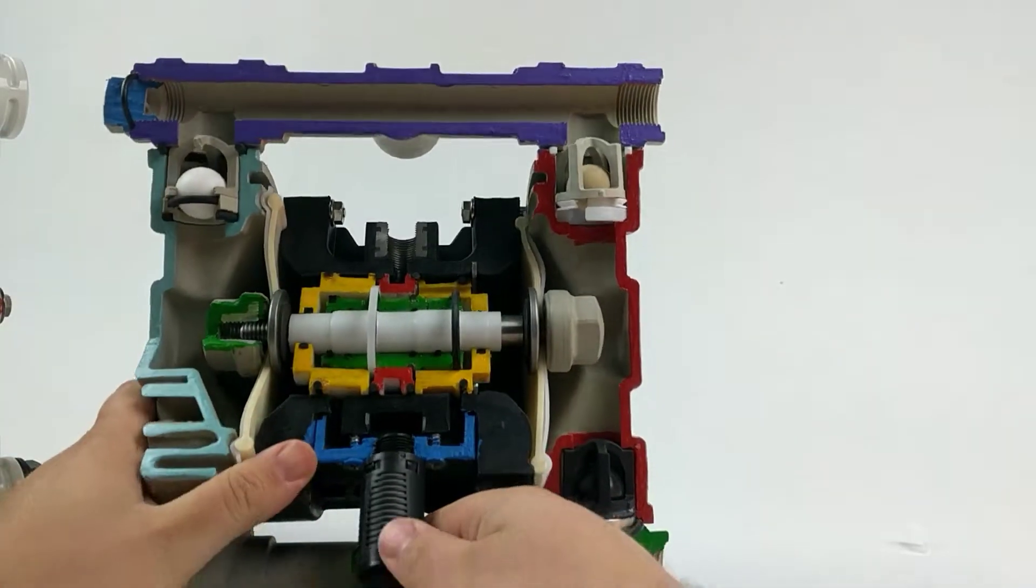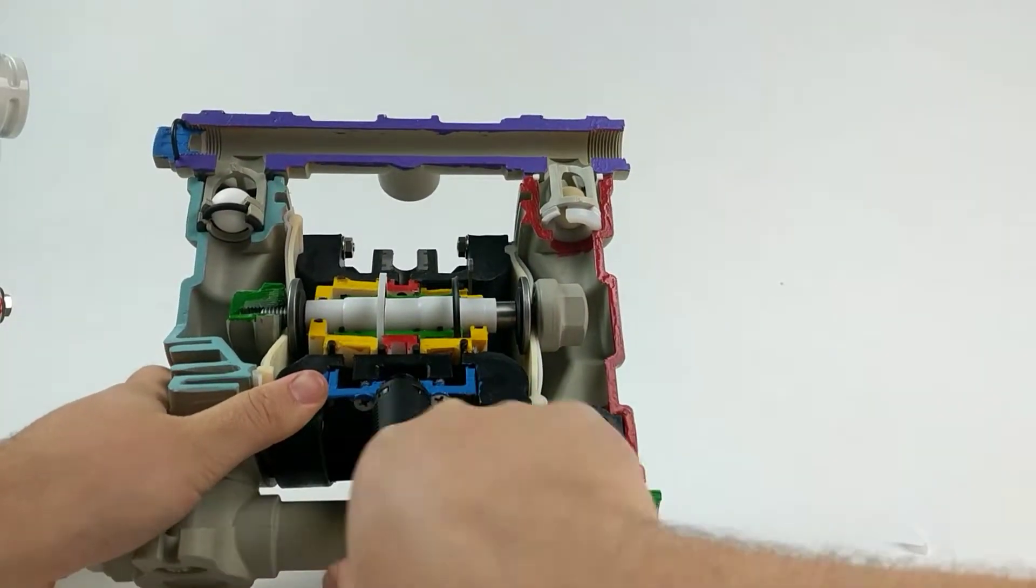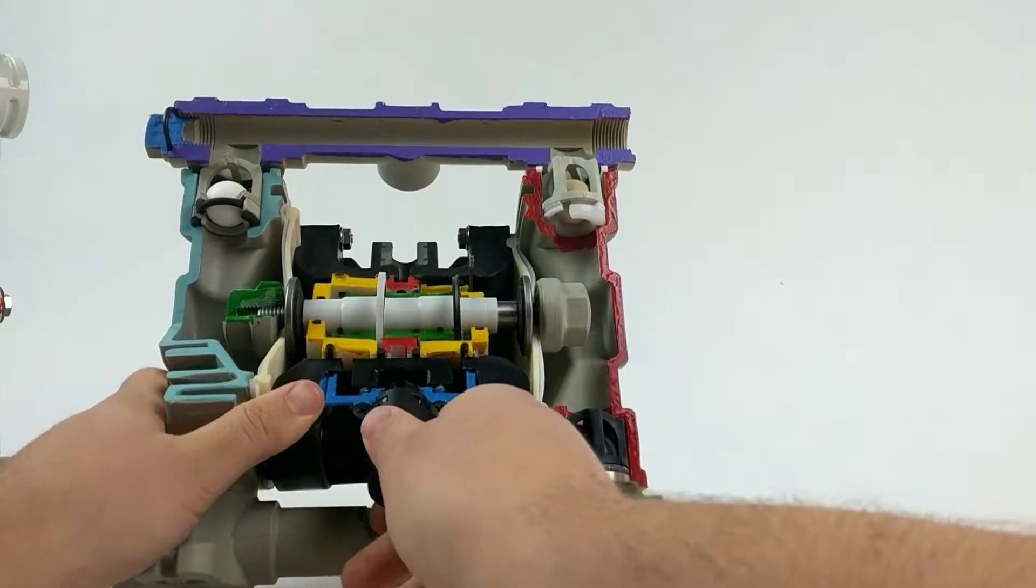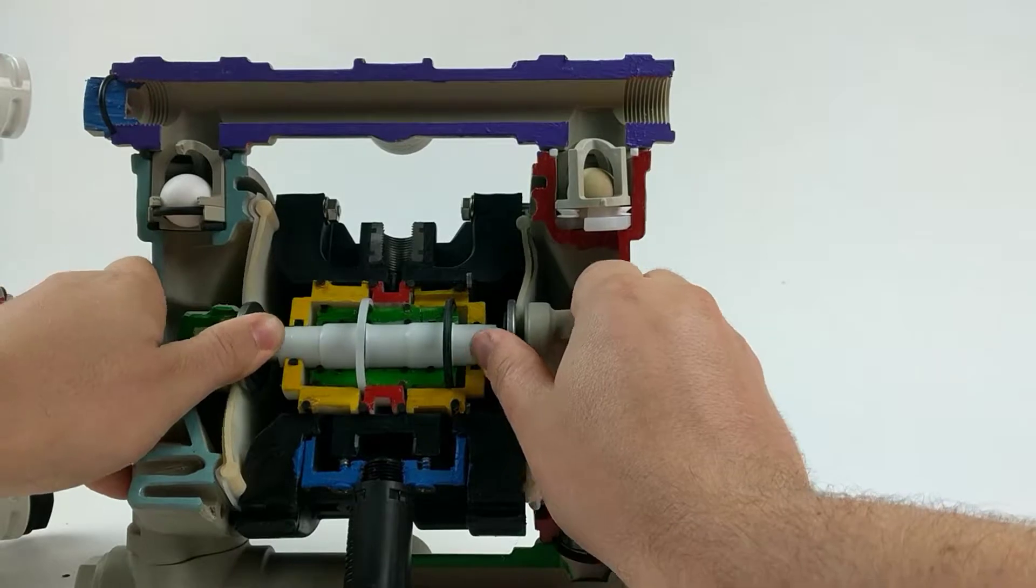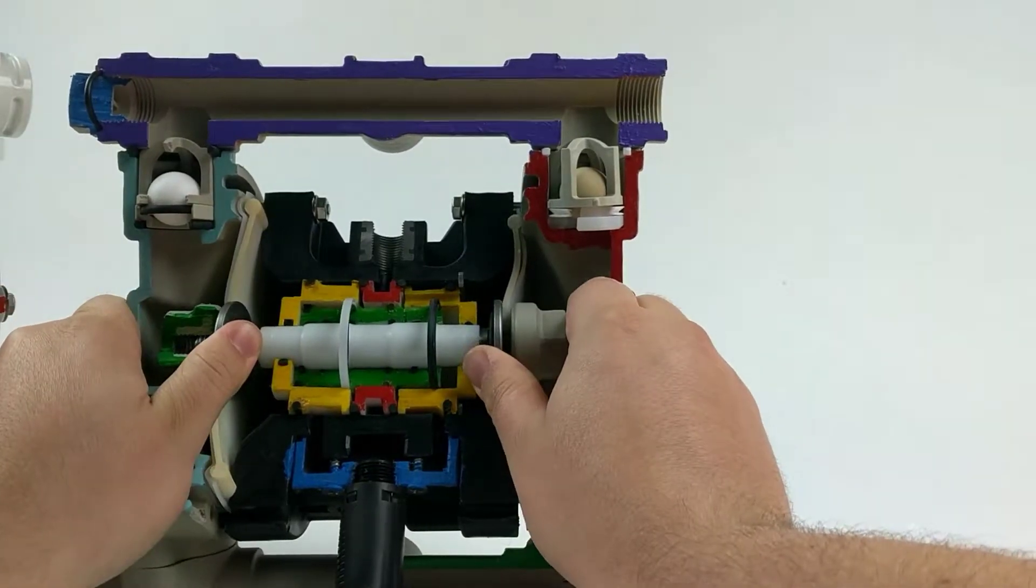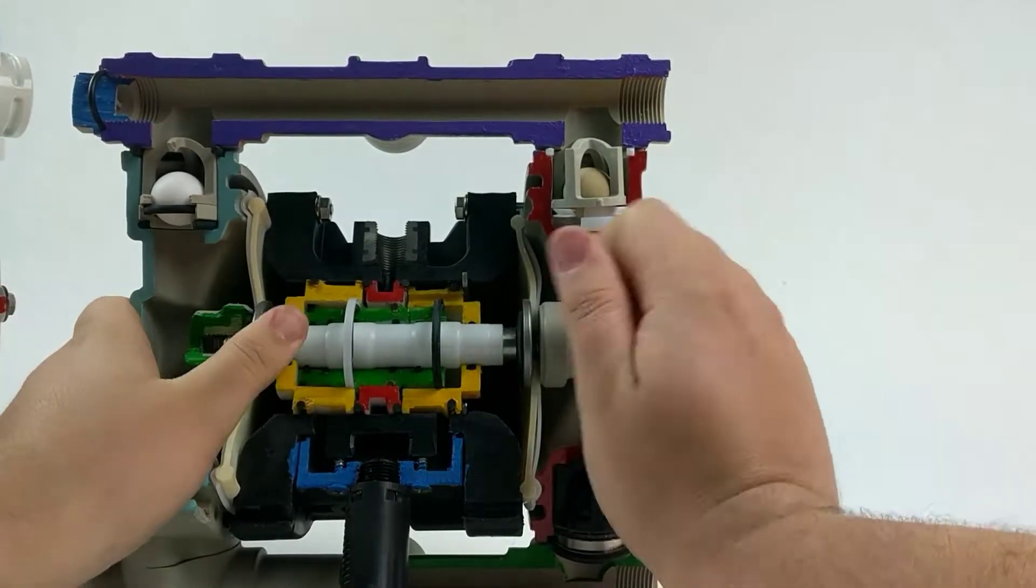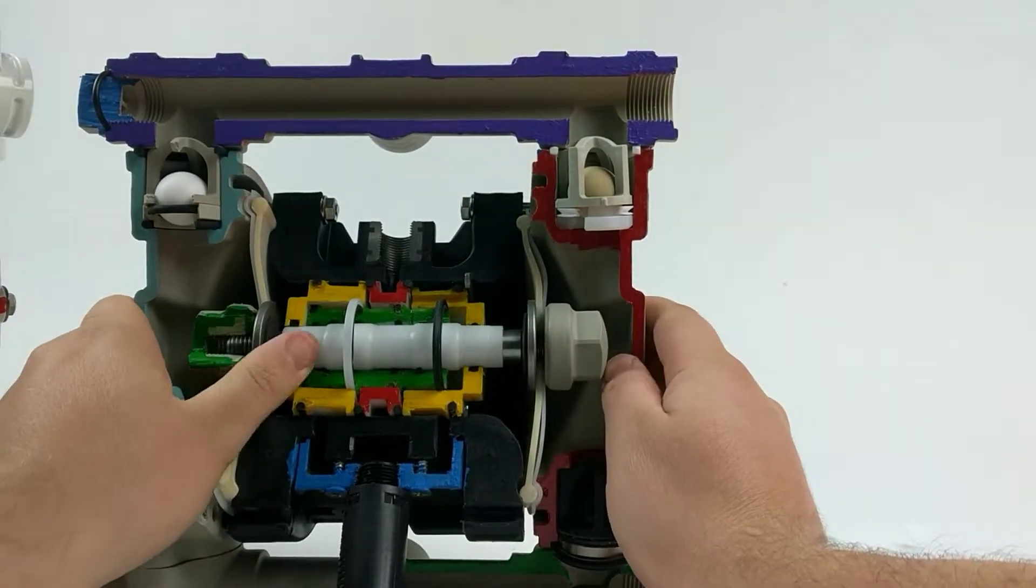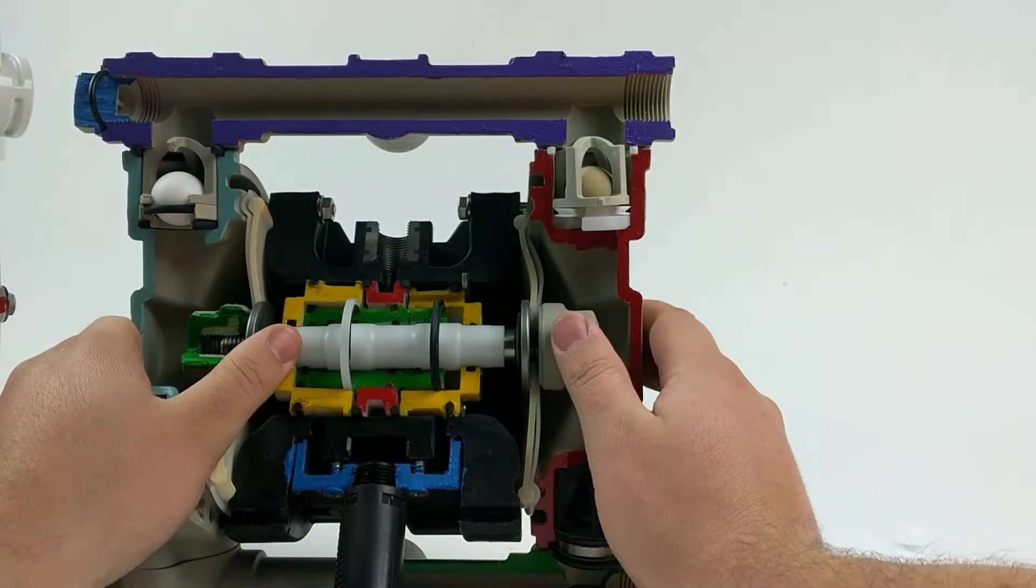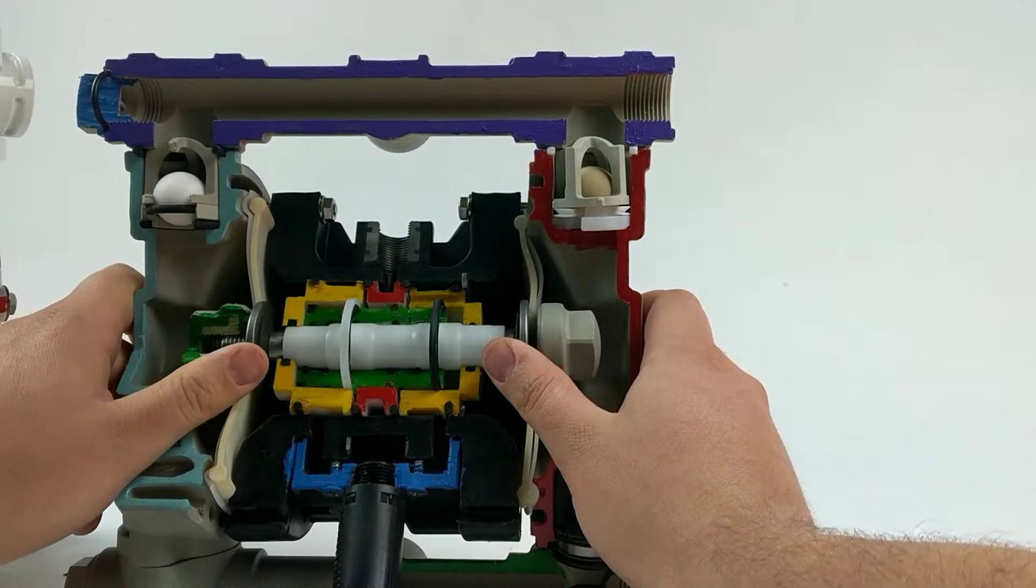Essentially how these work is the air is blown in here into the chamber and the diaphragms shuttle back and forth, one side fills, bounces back, other side fills, bounces back and that's the action of the double diaphragm pump.